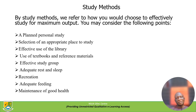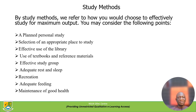The next sub-topic is study methods. By study method, you refer to how you choose to effectively study for maximum output. You may consider the following points: a planned personal study, selection of an appropriate place to study, effective use of the library, use of textbooks and references, effective study group, adequate rest and sleep, recreation, adequate feeding, and maintenance of good health.